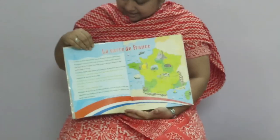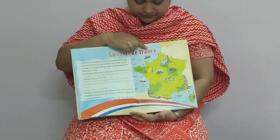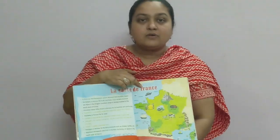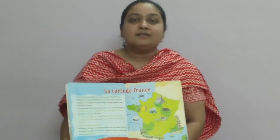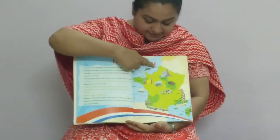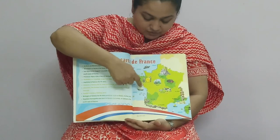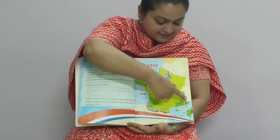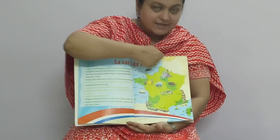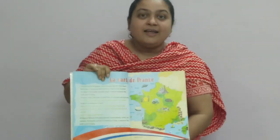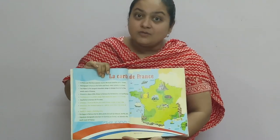This is La carte de France. La carte de France means the map of France. And as I told you, it has six sides, so it is a hexagon — the hexagon of the world.